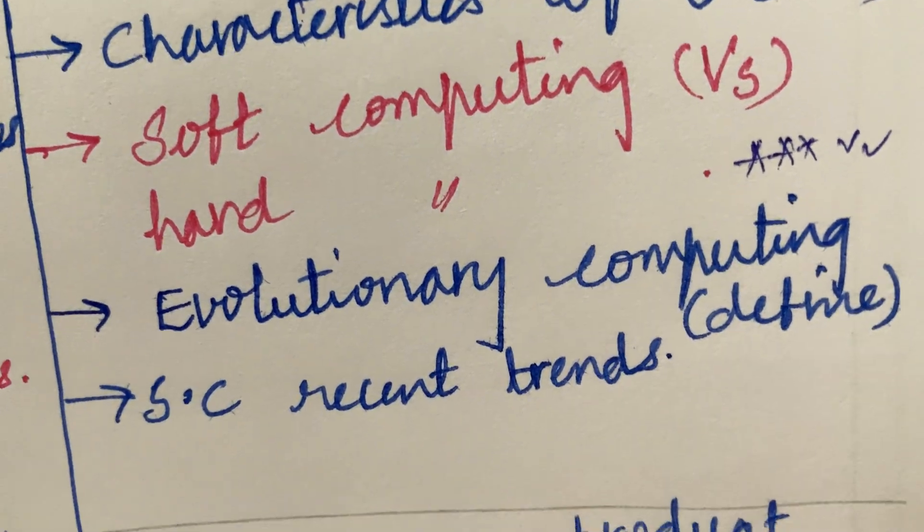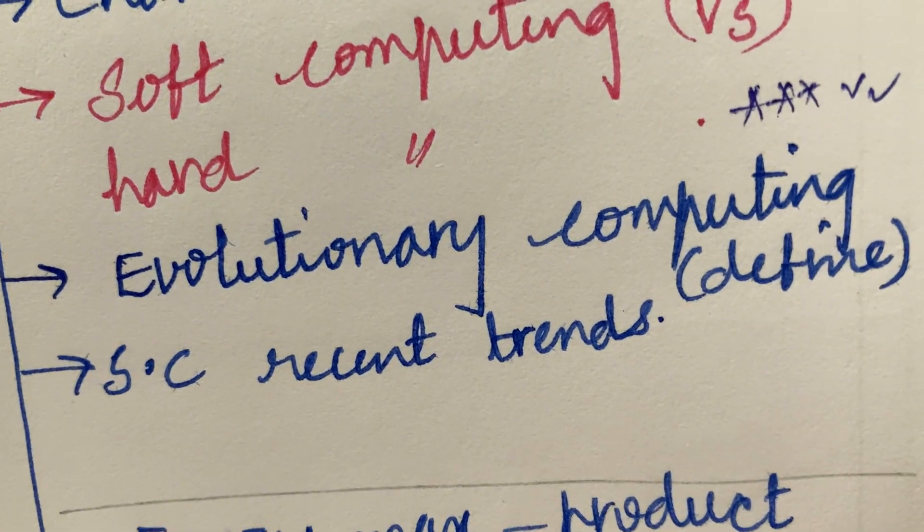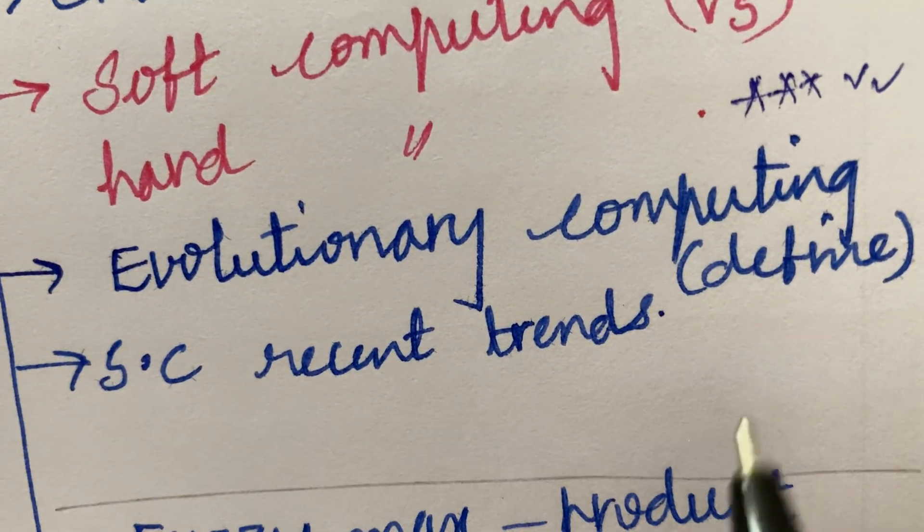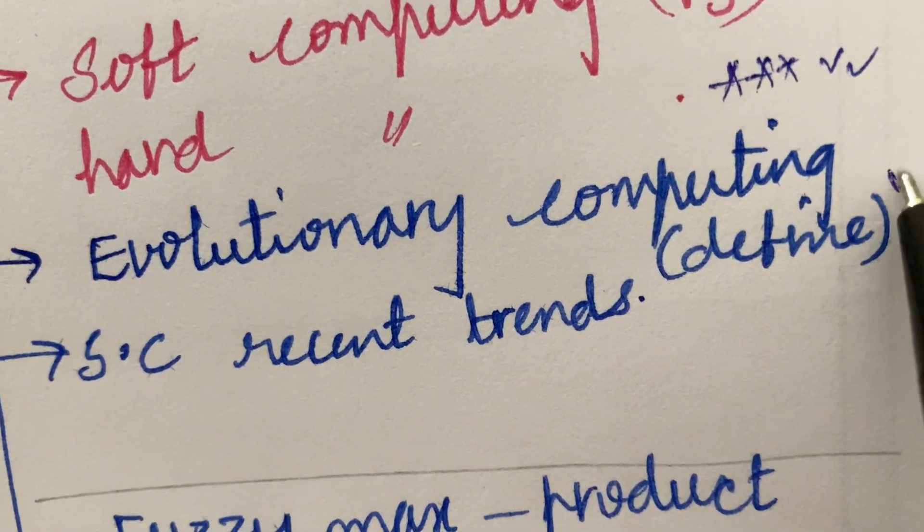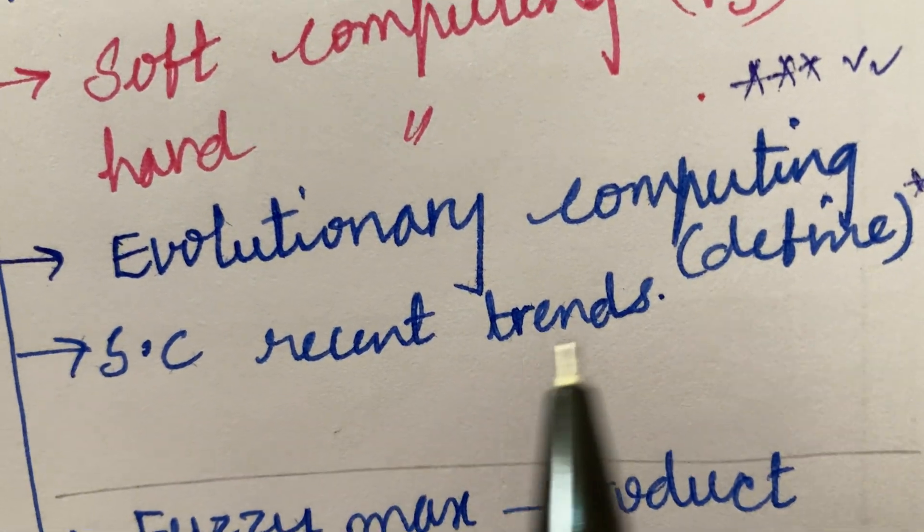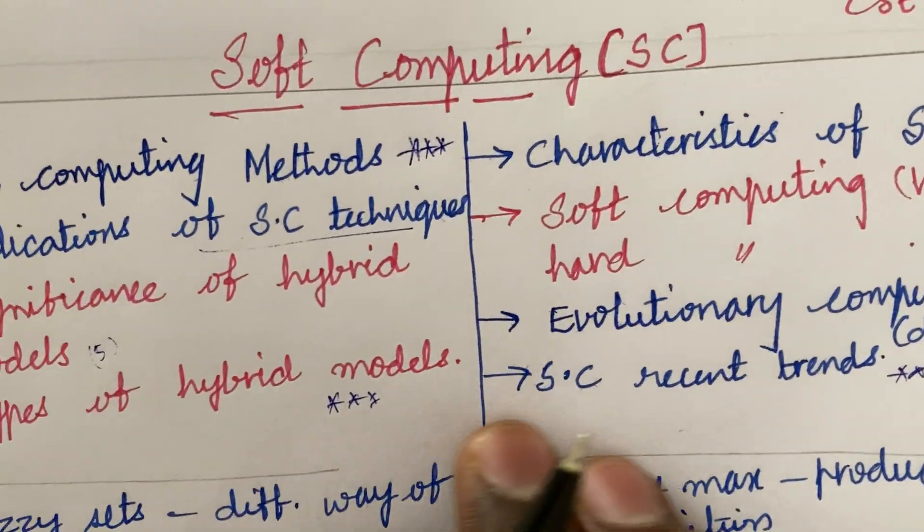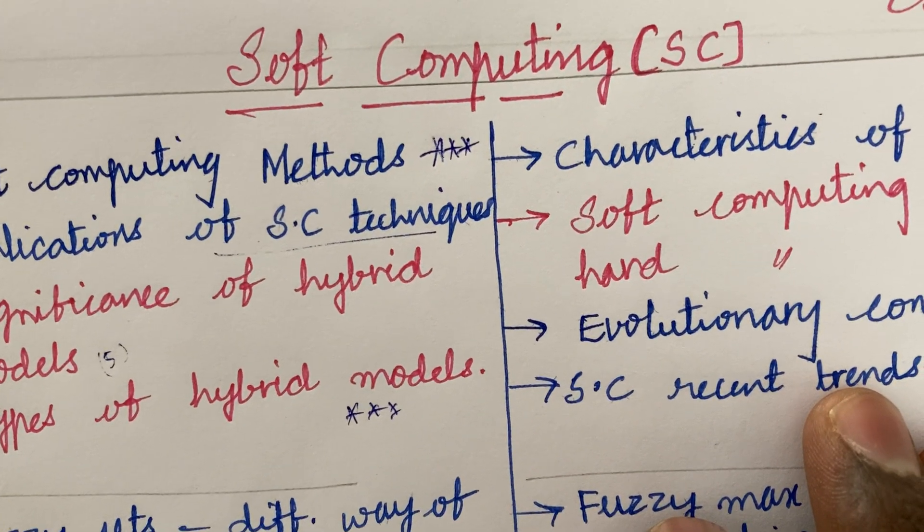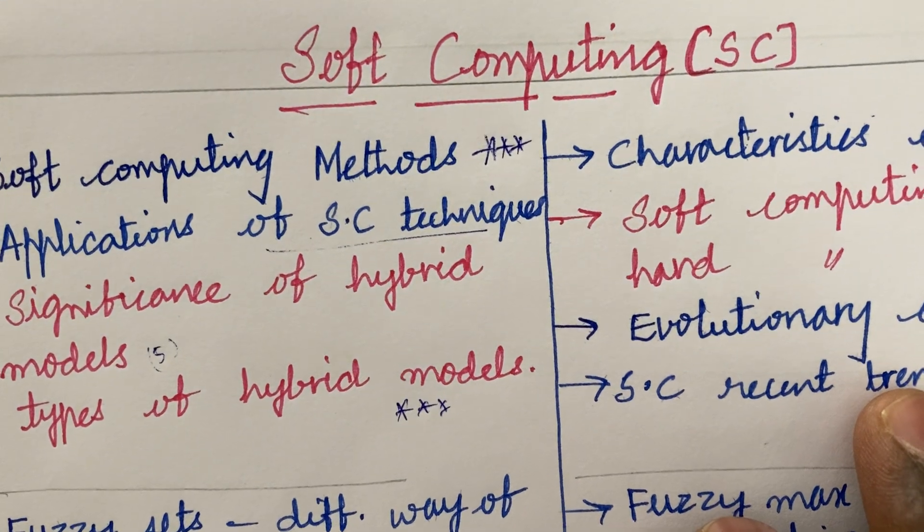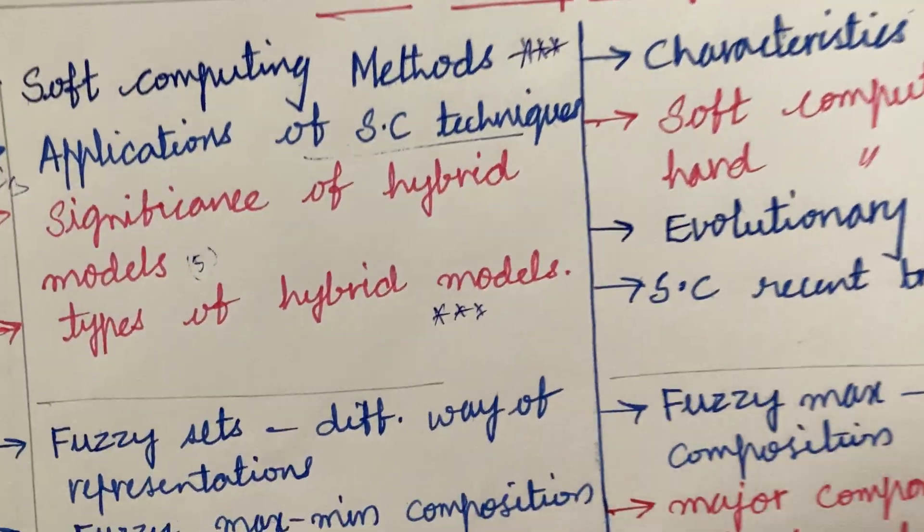As the course is too short in its structure, you may be getting only single question sometimes in part B. The evolutionary computing and defined term, and soft computing recent trends may be also a 3 mark question. These are the questions I have taken into consideration for part 1AB as well as 2AB and 3AB or 2 and 3 combination.